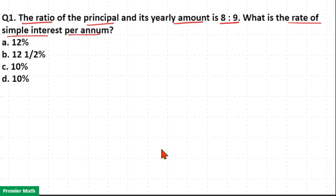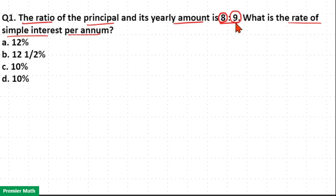We need the rate per annum. Here you can see I invested 8 parts in the bank. After 1 year I got 9 parts. That means the difference between 9 parts and 8 parts is 1 part, which is the interest I received after 1 year.